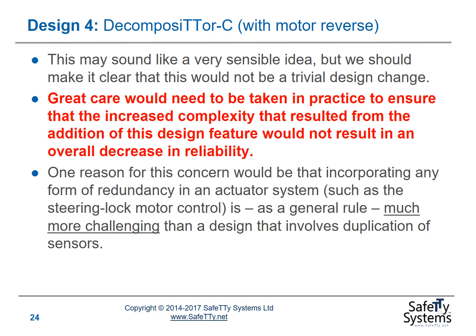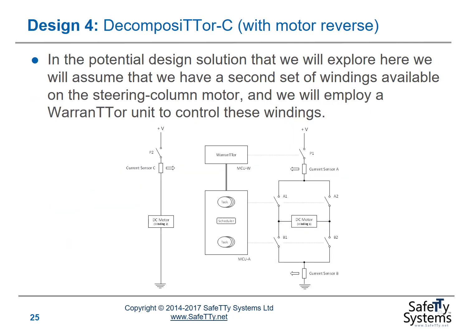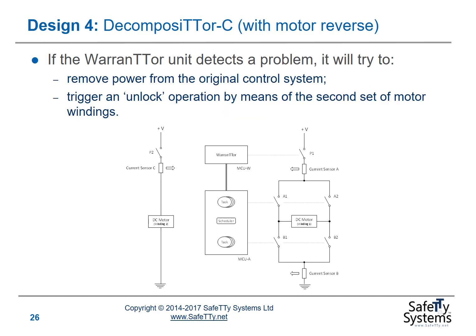Just imagine controlling a steering wheel: if your motor for turning the wheels jams, having another motor available doesn't help much if the wheels are already jammed. A similar challenge applies here. What we will assume is a common design solution: a second set of windings on the steering column motor, employing a warrantor unit to control these windings in the event that the steering column lock has been engaged. If the warrantor unit detects a problem, it will try to remove power from the original control system and trigger an unlock operation via the second set of motor windings.